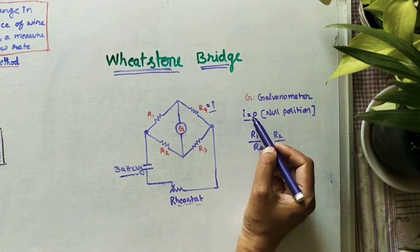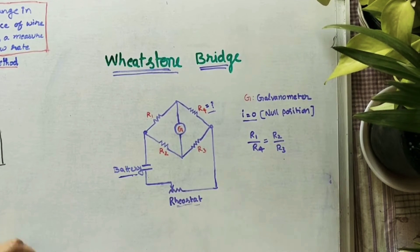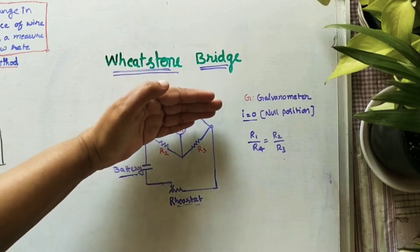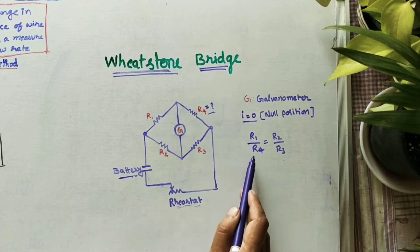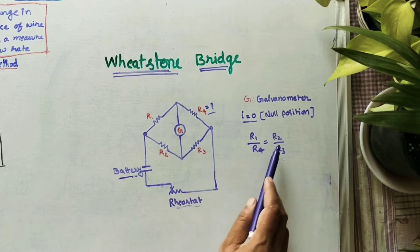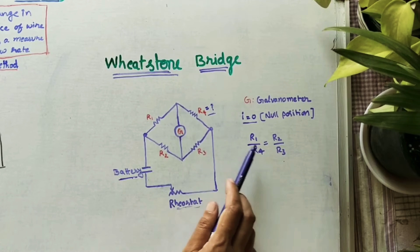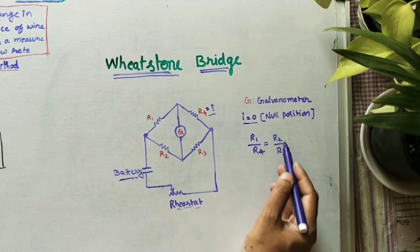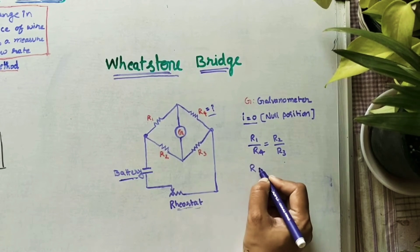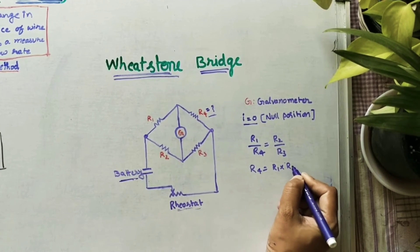We adjust the current so that whatever current inside the galvanometer is zero — this is called the null position, where the bridge is in balanced condition. In balanced condition, the ratio of resistances on one side equals the ratio on the other side: R1/R4 = R2/R3. Using this formula, we can find R4: R4 = R1 × R3 / R2. This is the main use of the Wheatstone bridge for finding resistance.